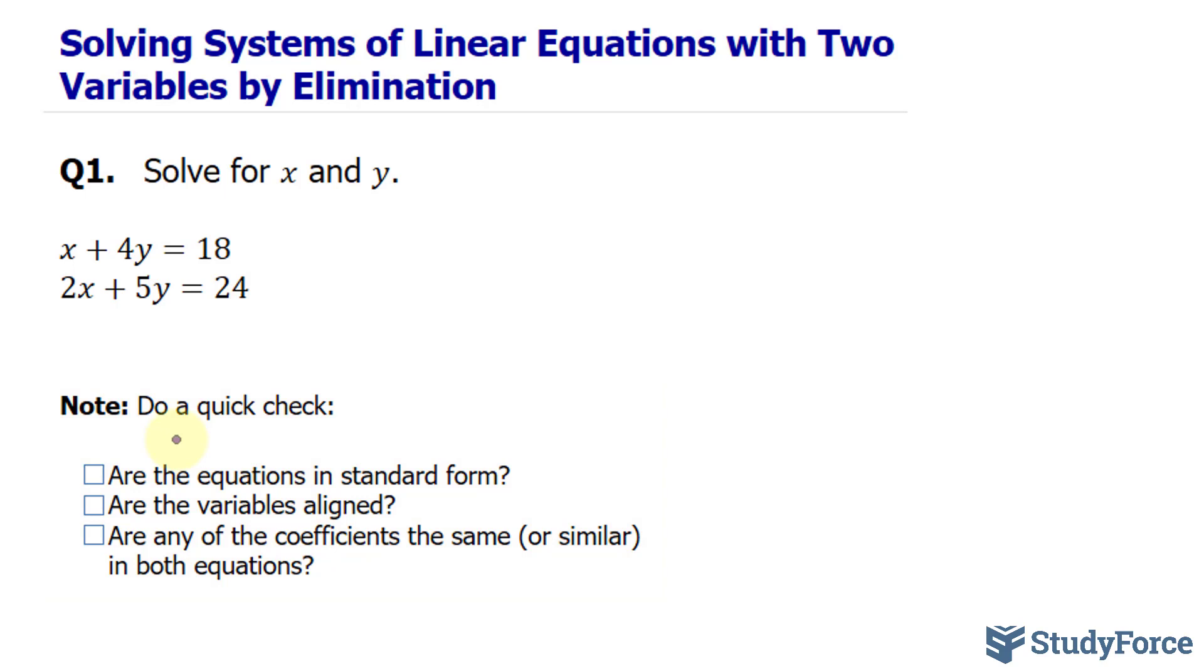That means that the variables are exclusively on one side and the constant is on the other. Notice that we have x, y and x, y on the left side for both of these and the constants on the right side. So the first point is checked.